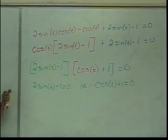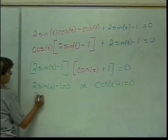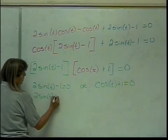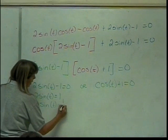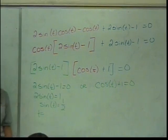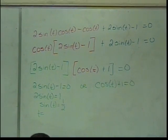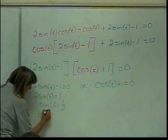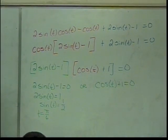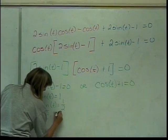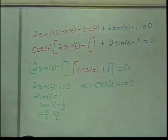This gives me 2 sine of t minus 1 equals 0, or cosine of t plus 1 equals 0. We know how to solve this — just start moving things over. I'll get 2 sine of t equals 1, so sine of t equals 1 half. Where is sine of t equal to 1 half? That happens at pi over 6, and also at 5 pi over 6, since we go all the way from 0 to 2 pi.